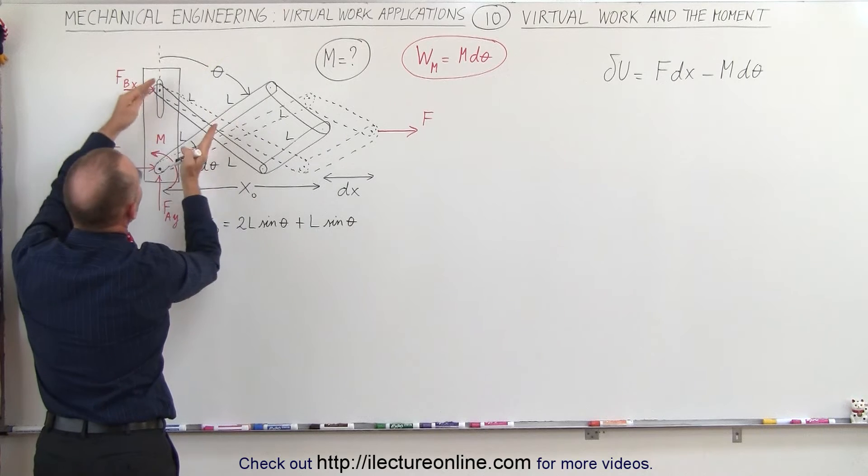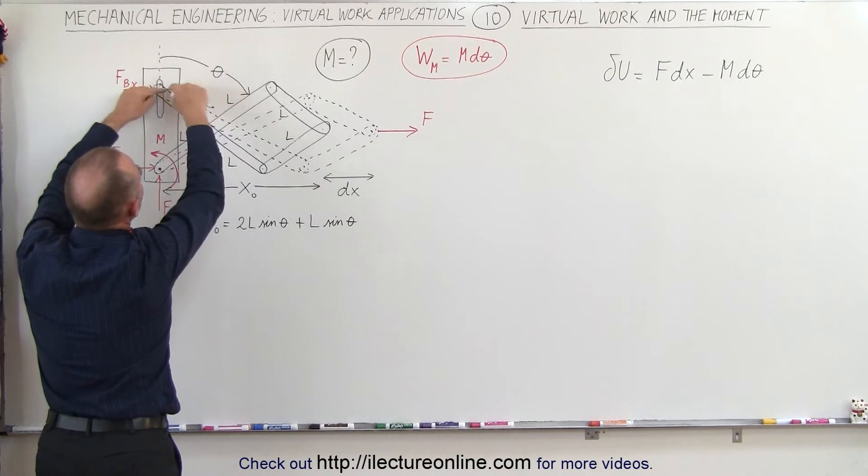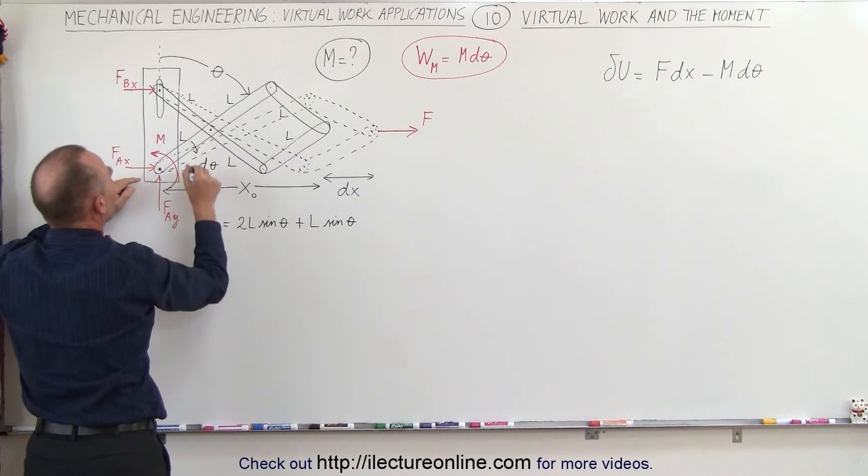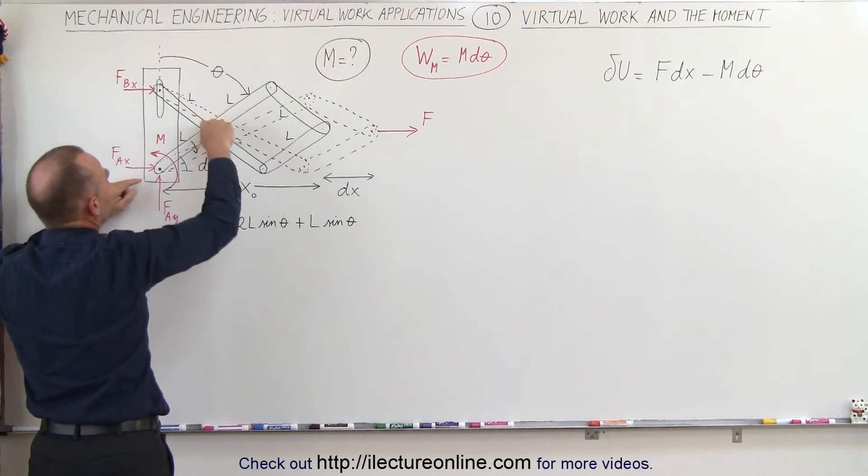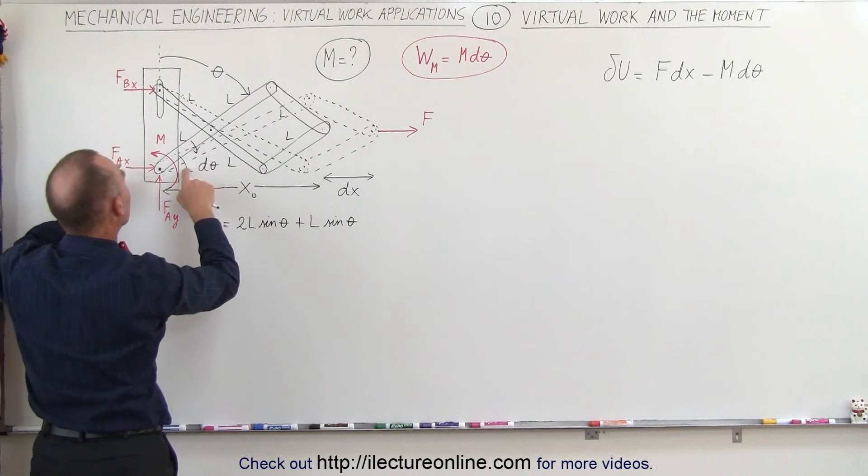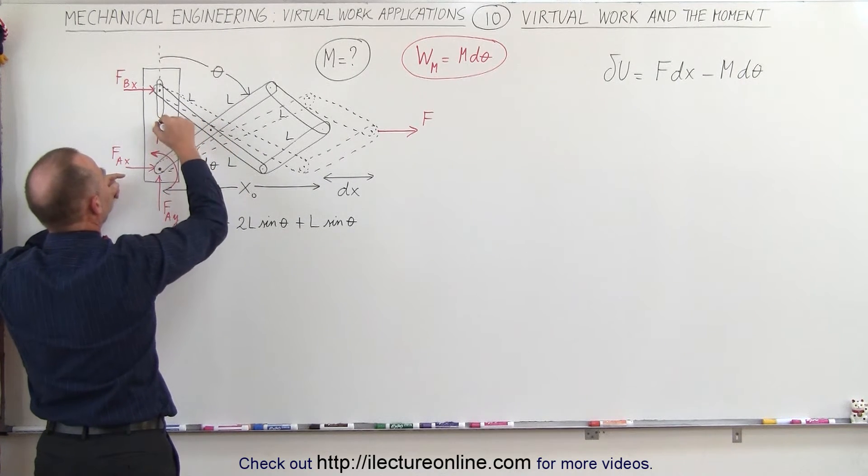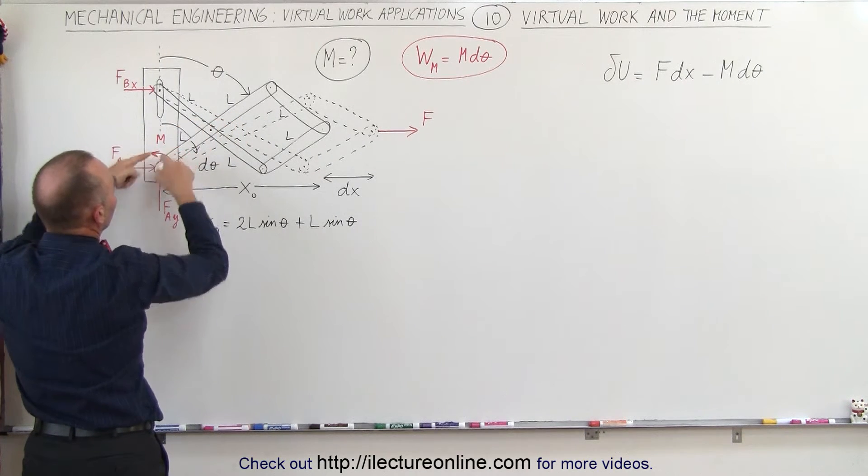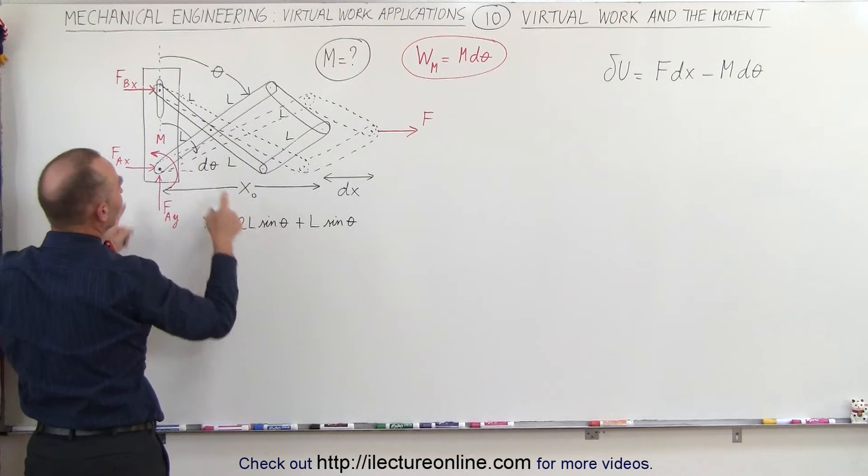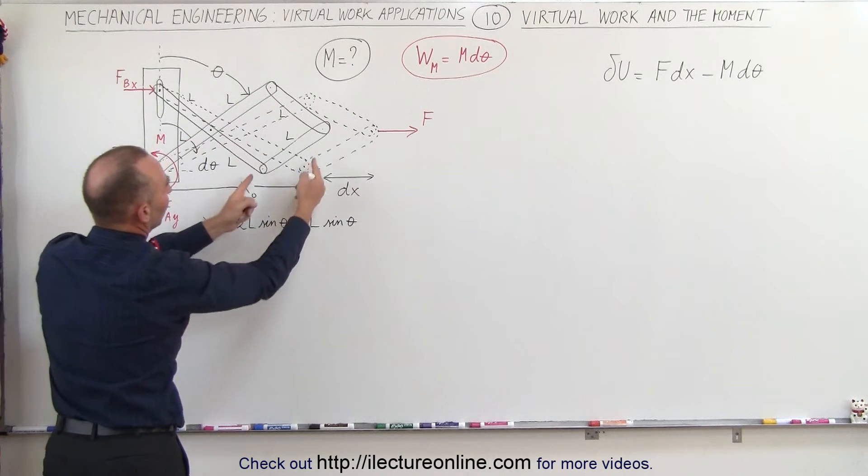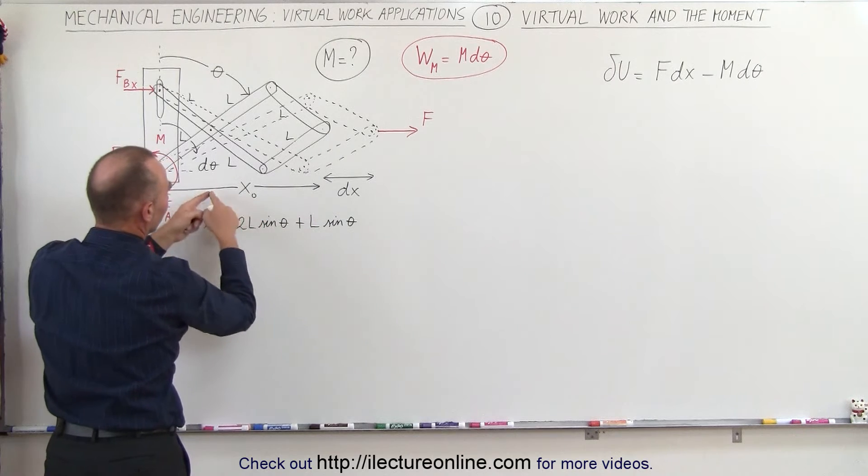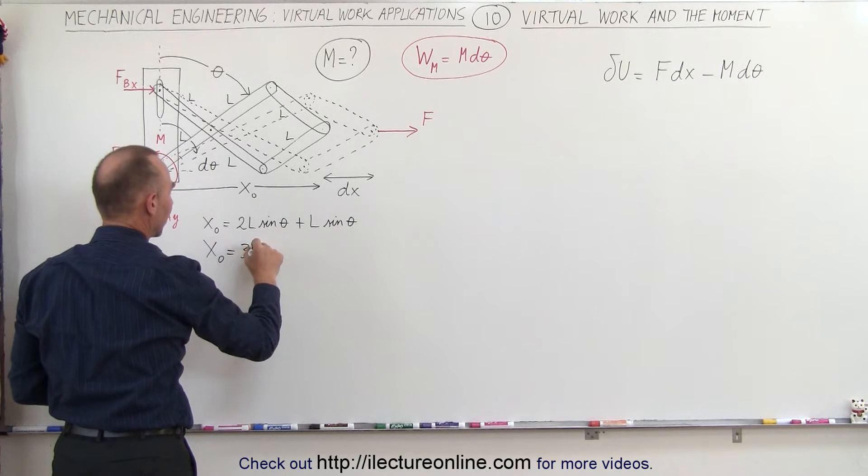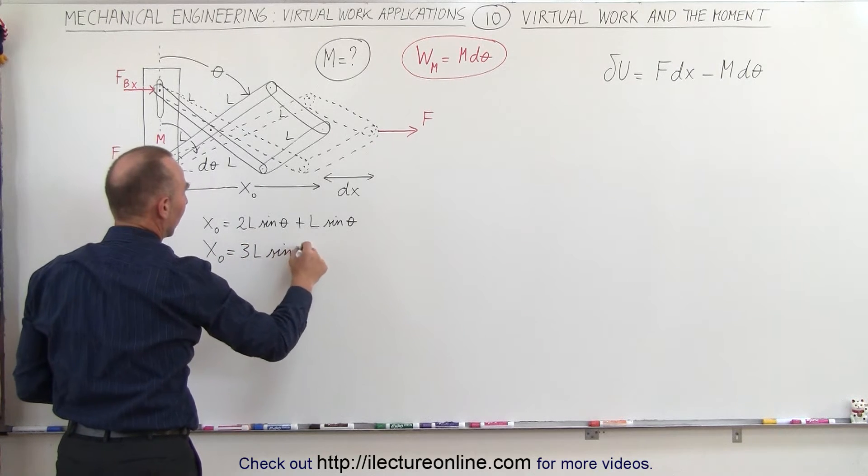So the distance from there to there would be L times the sine of the angle θ because it would be opposite. This here is the angle θ, that's the same angle here. You can see here that this distance here is opposite to the angle, therefore we have 2L because it's an L here and L there times the sine of θ plus another L times the sine of θ for the total distance of x₀. So this can be written x₀ as being equal to 3 times L times the sine of θ.